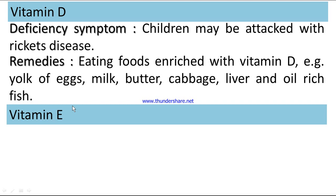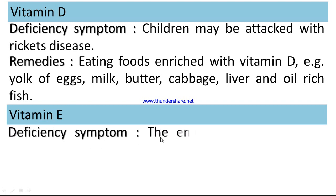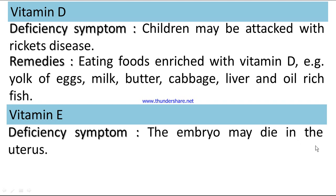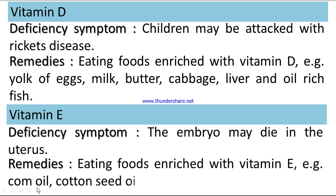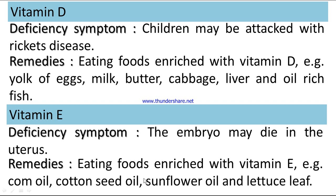Vitamin E: Deficiency symptom — the embryo may die in the uterus. Remedies: eating foods enriched with Vitamin E, such as corn oil, cotton seed oil, sunflower oil, and lettuce leaf.